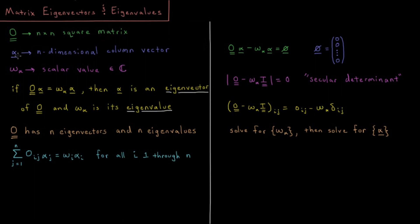What we're going to find here is a vector alpha, which is some n-dimensional column vector, and some scalar value omega_alpha, which is in general a complex number, though frequently a real number.